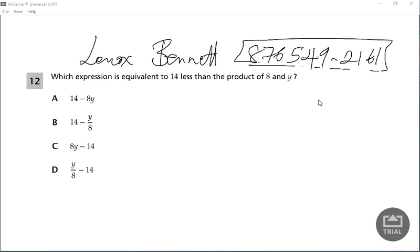Let's look at this one. Which expression is equivalent to 14 less than the product of 8 and y? The product of 8 and y would be 8 times y, and 14 less than that is minus 14. You can write this as 8y minus 14, so that would be C.